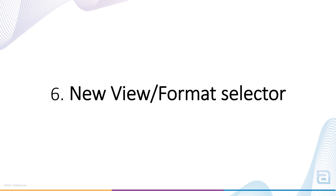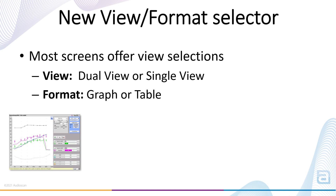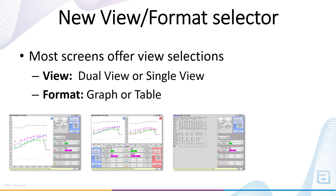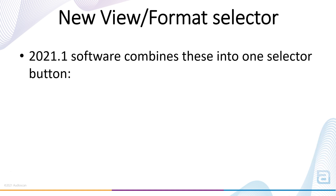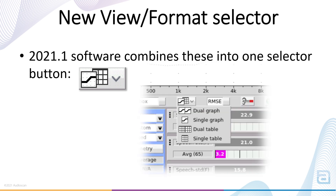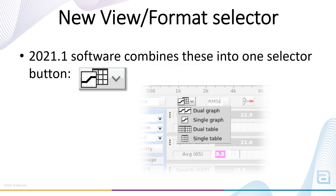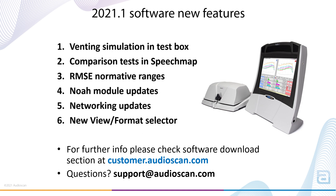New view format selector. Most test screens in the Verifit 2 offer the choice between single and dual view and between graph and table format. In previous software these selections were made in two separate text-based selectors. For convenience, these have all been combined into one easy quick menu. Thanks for taking the time to look at these new features. Full instructions are available in the updated user guide included with your download. Please visit our website for software downloads and further information, and contact us if you have questions.